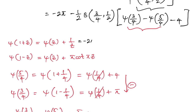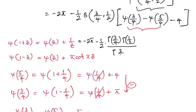Plugging back in, we have -2π minus (1/2)·B(3/4, 1/2)·(π − 4). Using the relation between the beta and gamma functions, B(3/4, 1/2) = Γ(3/4)·Γ(1/2) / Γ(3/4 + 1/2) = Γ(3/4)·Γ(1/2) / Γ(5/4). This simplifies since Γ(5/4) = Γ(1 + 1/4) = (1/4)·Γ(1/4), and Γ(1/2) = √π.